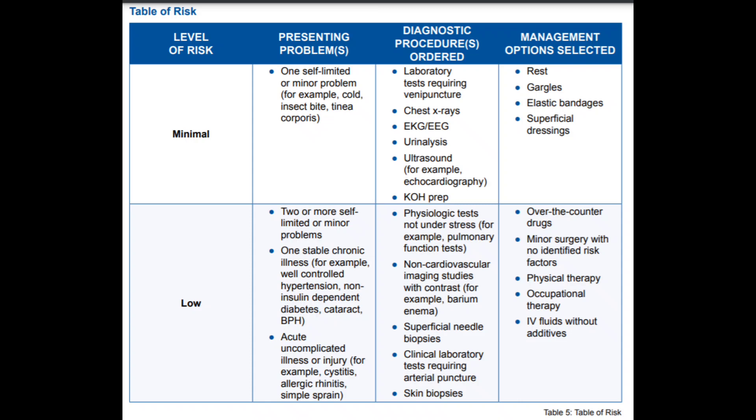Low risk includes two or more self-limited or minor problems, one stable chronic illness like hypertension or diabetes, or acute uncomplicated illness such as simple sprain or allergic rhinitis. Diagnostic procedures include physiologic tests not under stress, non-cardiovascular imaging studies, superficial needle biopsies, and lab work. Management options are OTC drugs, minor surgery, physical therapy, occupational therapy, and IV fluids without additives.